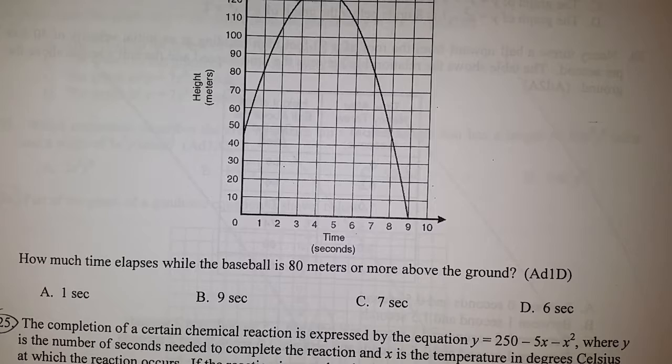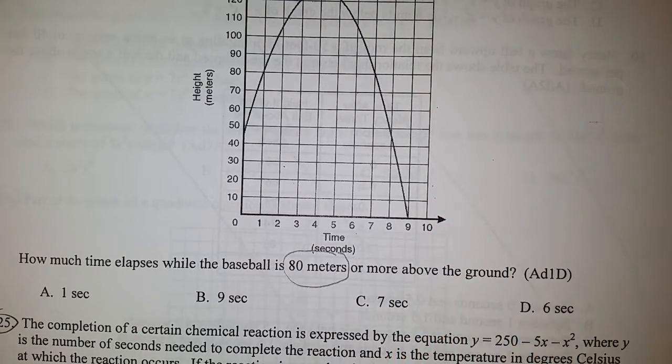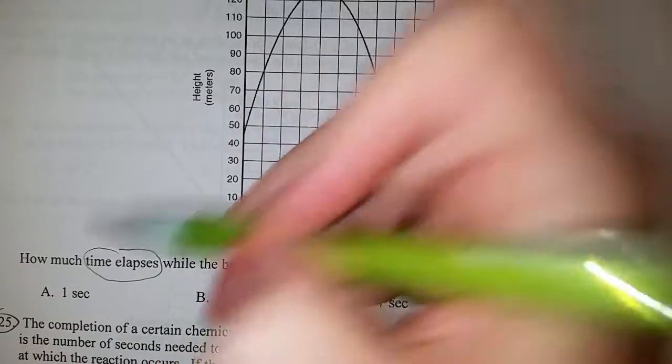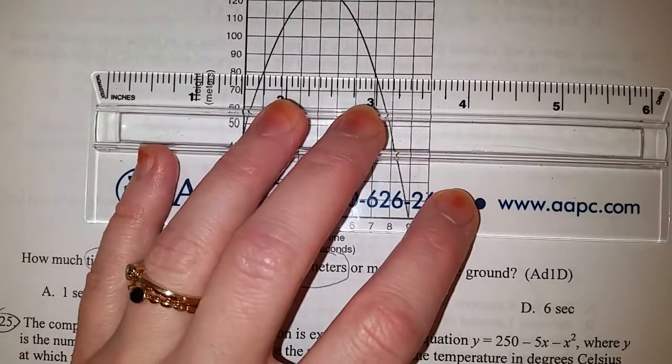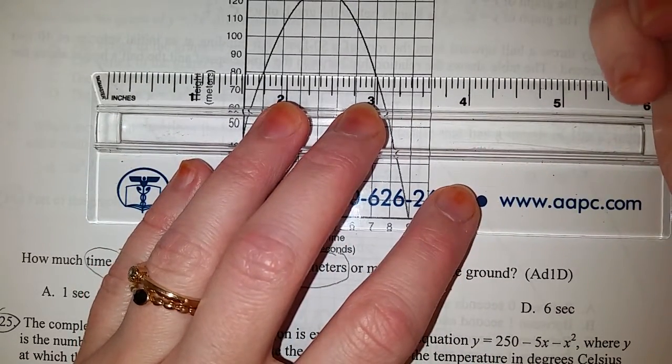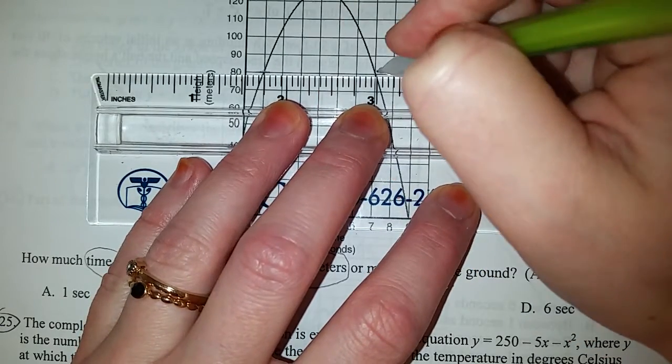What you need to do in this case is go to the height of 80 meters, and we need to find the time period, not just a particular point but a time period, meaning a certain amount of seconds that pass by while the ball is 80 meters or above.